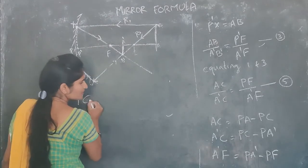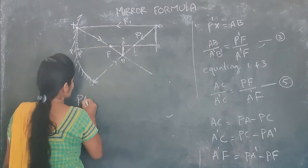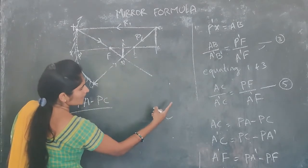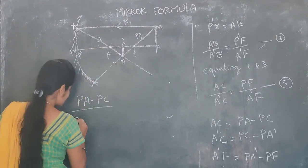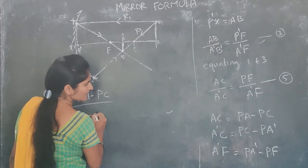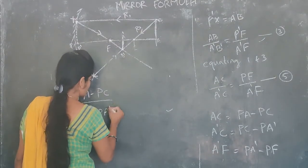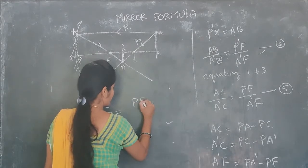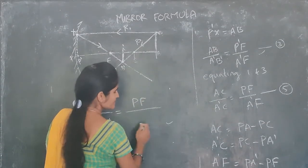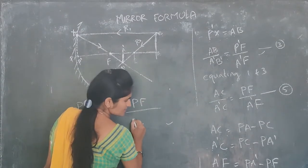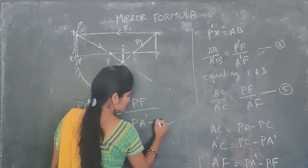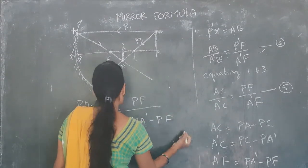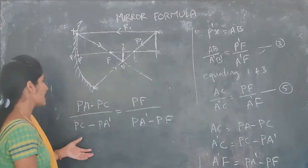Substituting: AC is PC minus PA, A dash C is PC minus PA dash, and A dash F is PA dash minus PF. This gives us the full substituted equation.